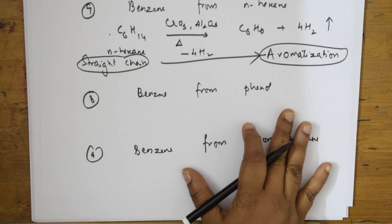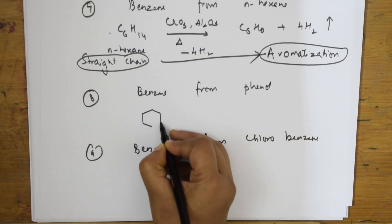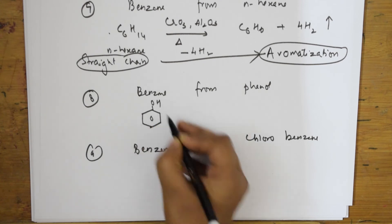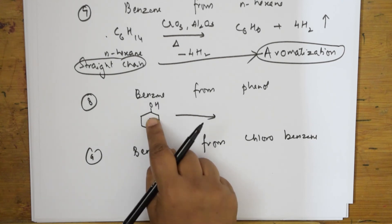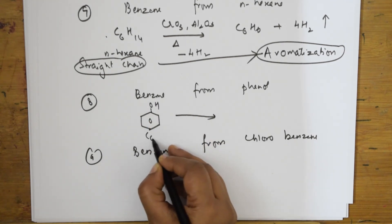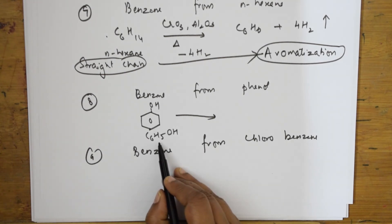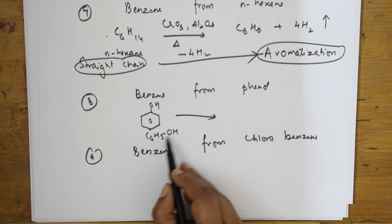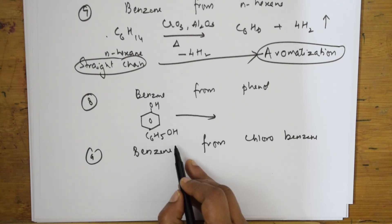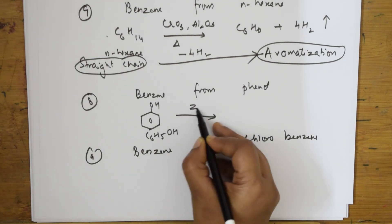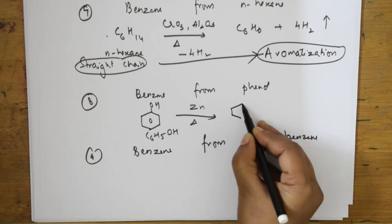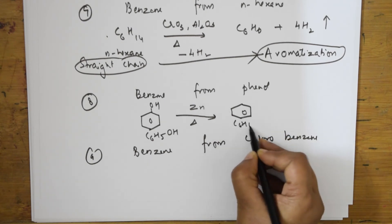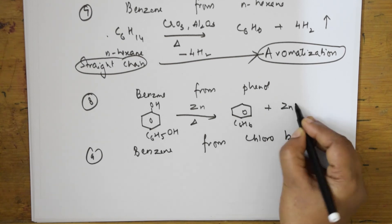If I take phenol — C6H5OH — and I need to prepare benzene, I have to add hydrogen and remove oxygen, which is a reduction. So I use a reducing agent like zinc and heat it. Automatically benzene C6H6 comes out and ZnO is formed as the byproduct.